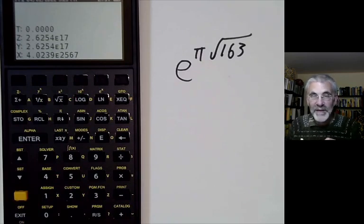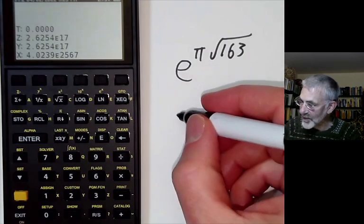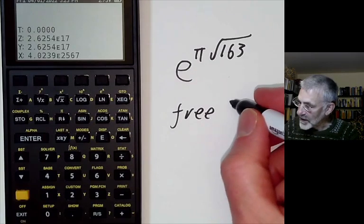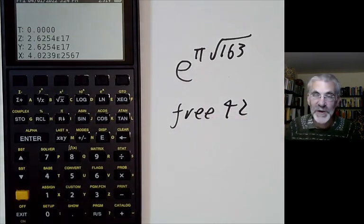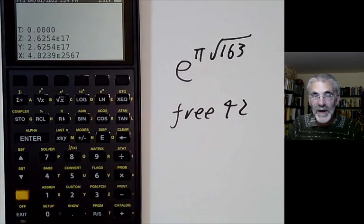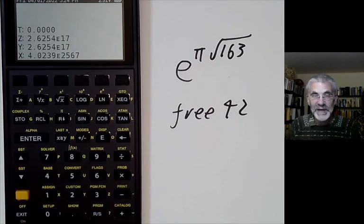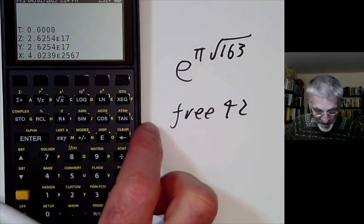The other really wonderful thing about this calculator is you can sort of get it for free. You can't get the calculator itself for free, but you can get an app for it written by Thomas Ocken. If you search for Free42 on Google, it will give you places where you can download an app for Macintoshes or PCs or whatever. So Thomas Ocken has very kindly made this available for free.